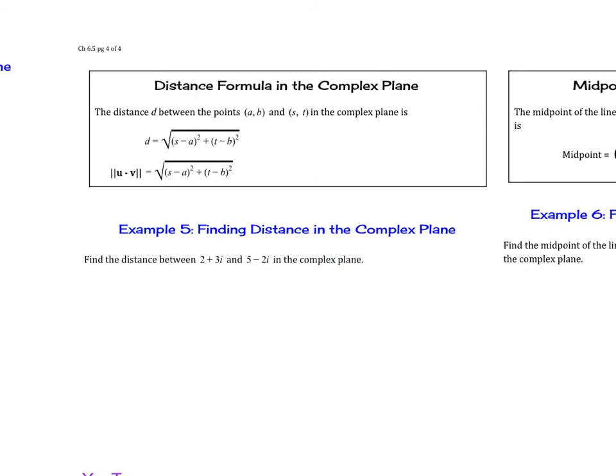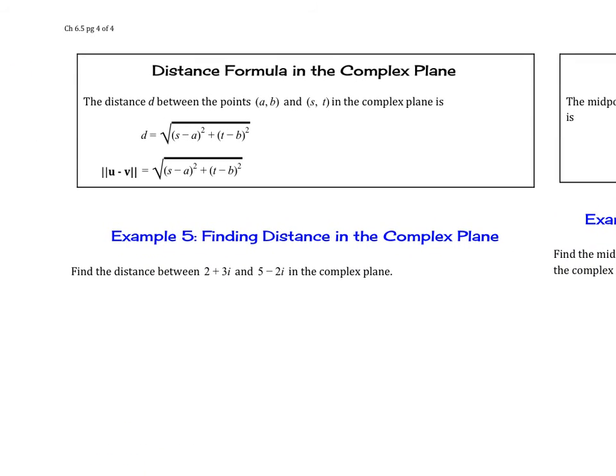We're just trying to find the distance, so we're using this formula, which is essentially our distance formula. The distance formula in the complex plane: the distance d between the points a, b and s, t in the complex plane is the square root of s minus a squared plus t minus b squared, and that also gives us our magnitude when subtracting the magnitudes.